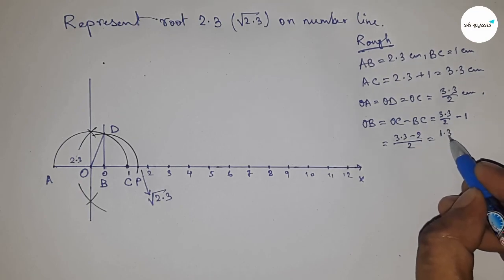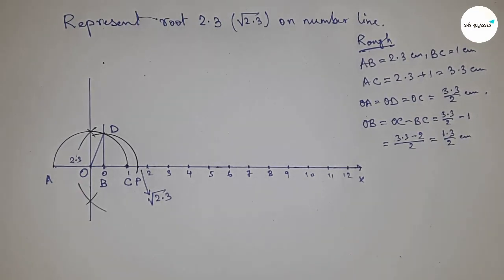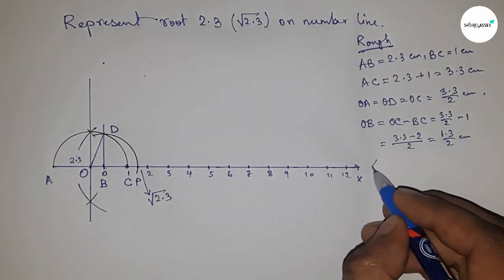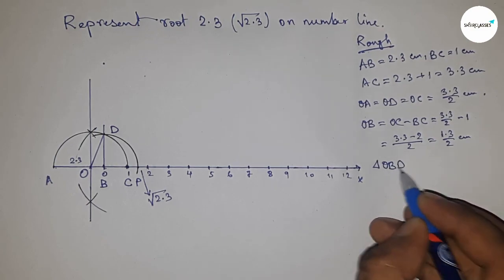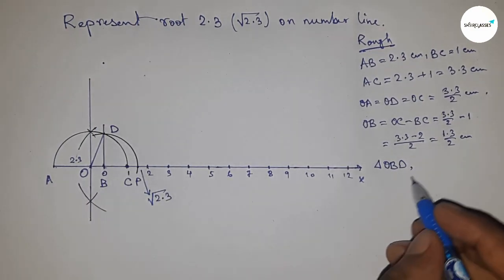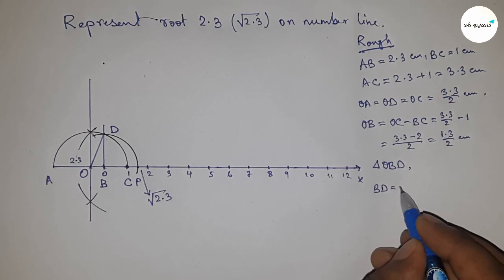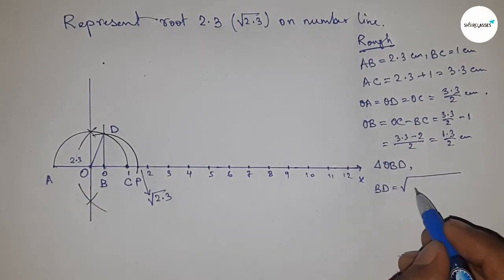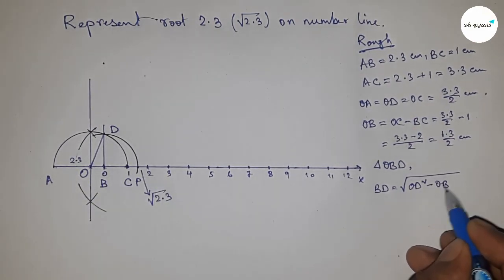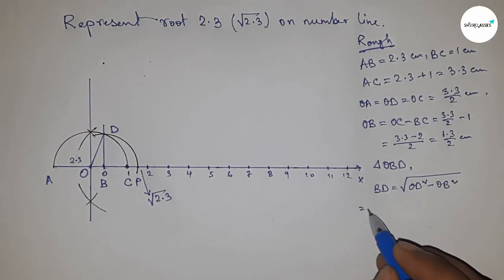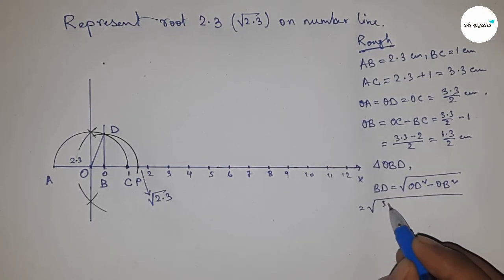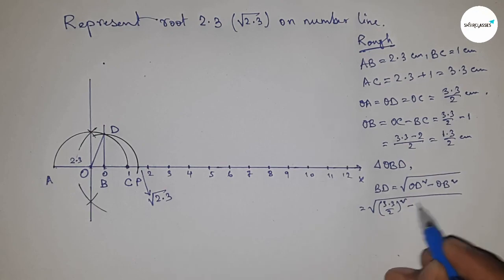From right angle triangle OBD, we can write BD equals, by using Pythagorean theorem, the square root of hypotenuse squared minus base squared. Putting the values: square root of (3.3/2) whole squared minus (1.3/2) whole squared.